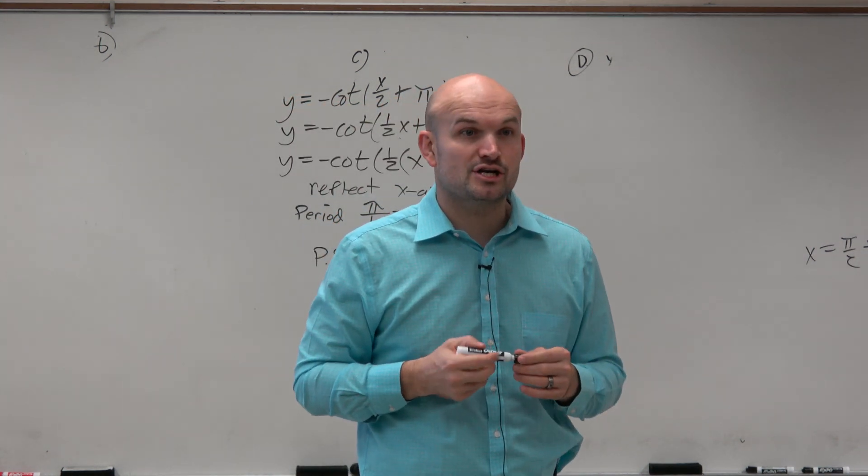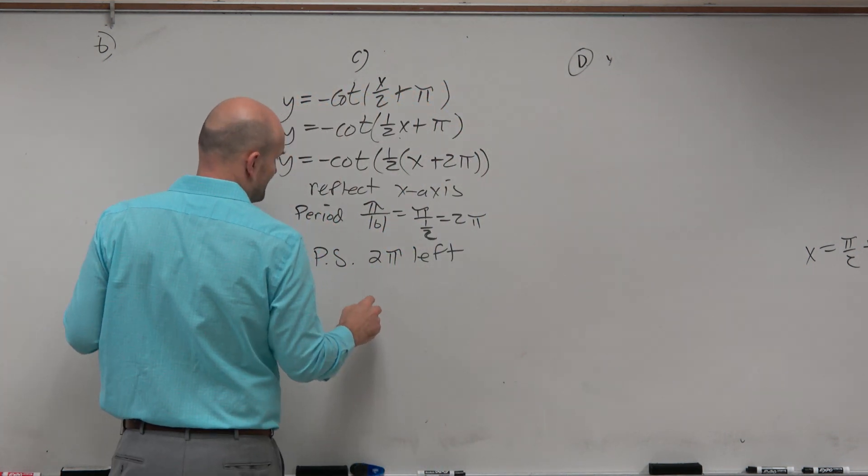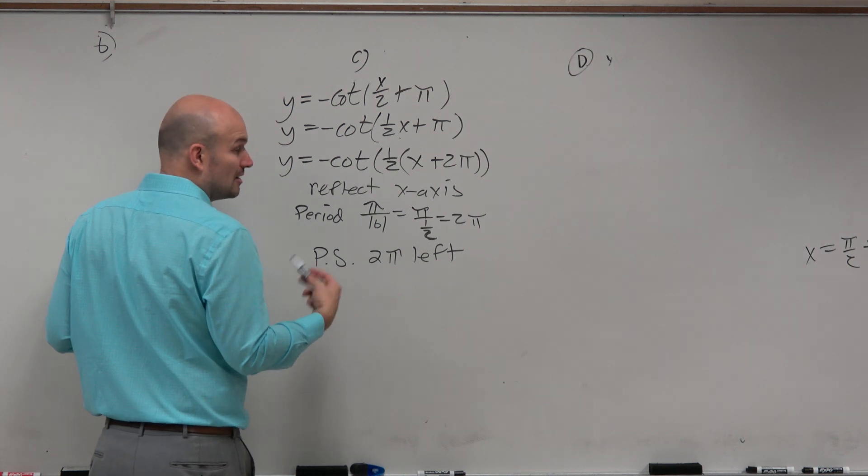We know the range is all real numbers. And the cotangent, the vertical asymptote occurs every pi, 2 pi, or pi n.